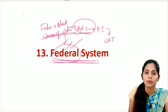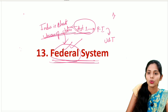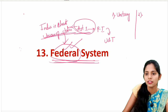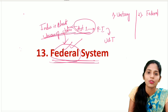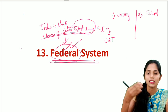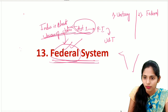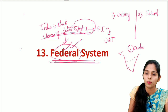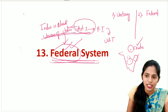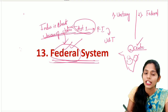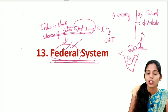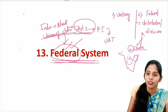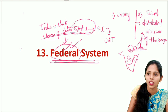There are mainly two types of government systems - the first one is unitary and the second one is federal. To understand the difference, we have to see the powers between the Union (center) and the state. If the power vested with the center is distributed or divided with the state, this type of government is called a federal government.